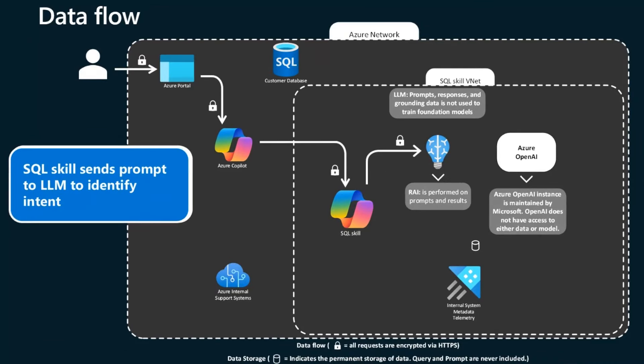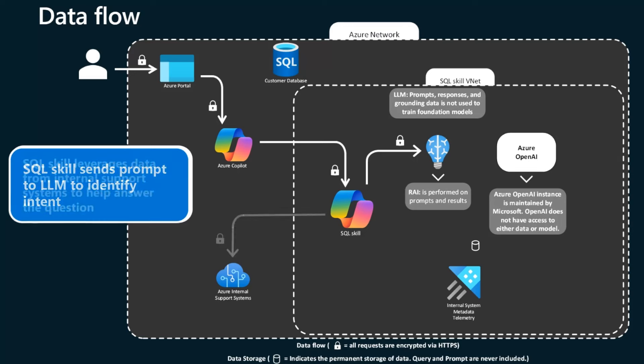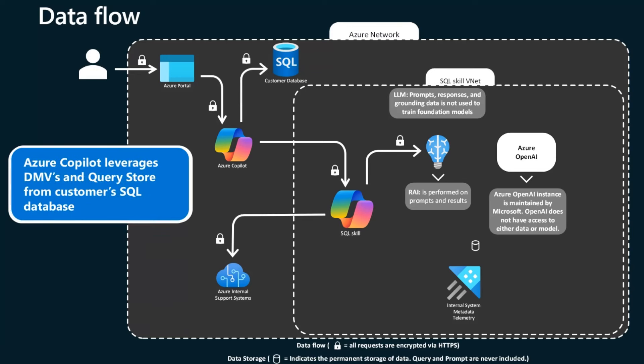At this point, SQL Copilot is going to kick in and it's going to use an LLM to identify what you're asking for. Are we asking about a configuration issue? Are we asking about a documentation kind of thing? Is it a performance issue? It's going to try to figure out what you're looking for. Once it understands what you're looking for, it's going to leverage data from a number of different sources to help answer that question. We might look at things like internal support systems. For example, if you ask 'why is my database slow?' — there might be something going on with the Azure service at that time, or there might be something inside your database as well. So it might look at things like service level information, dynamic management views, and query store to help answer that question, such as finding top CPU-consuming queries.